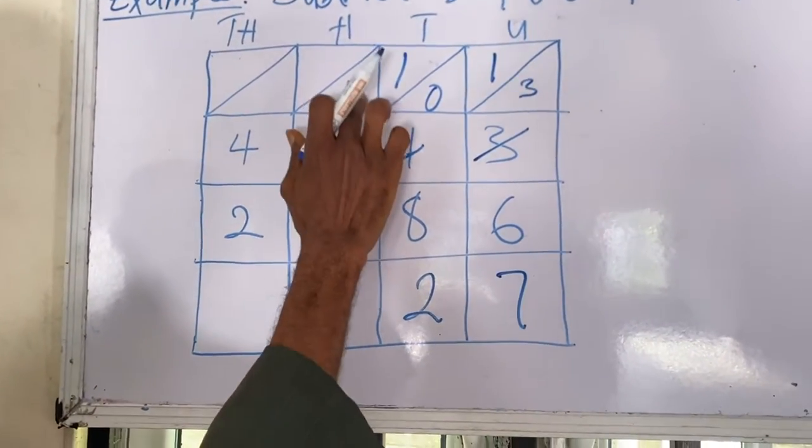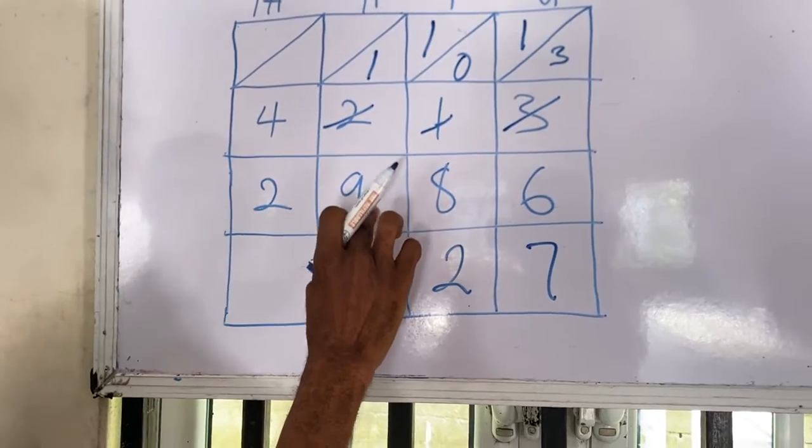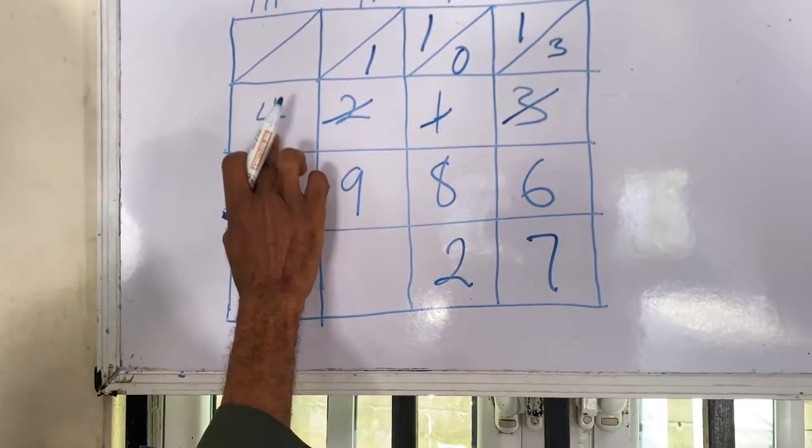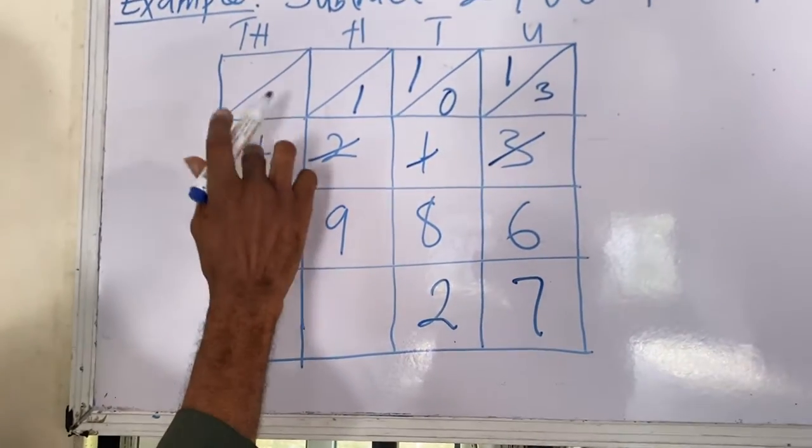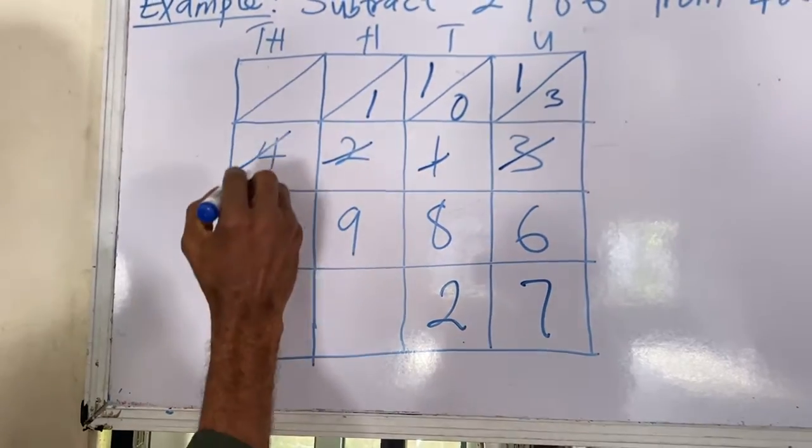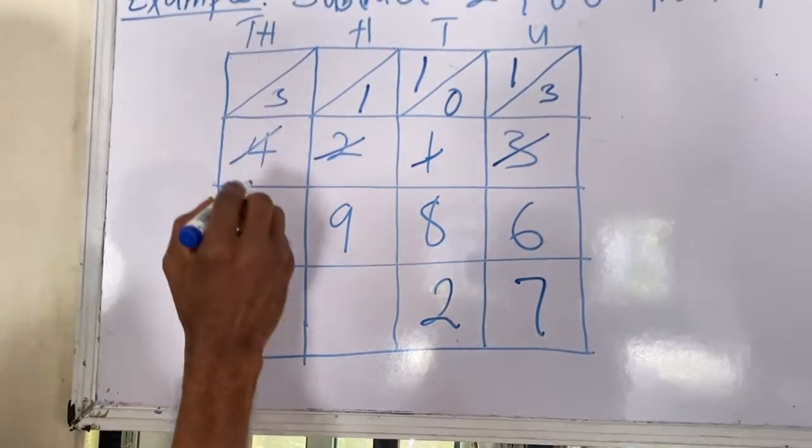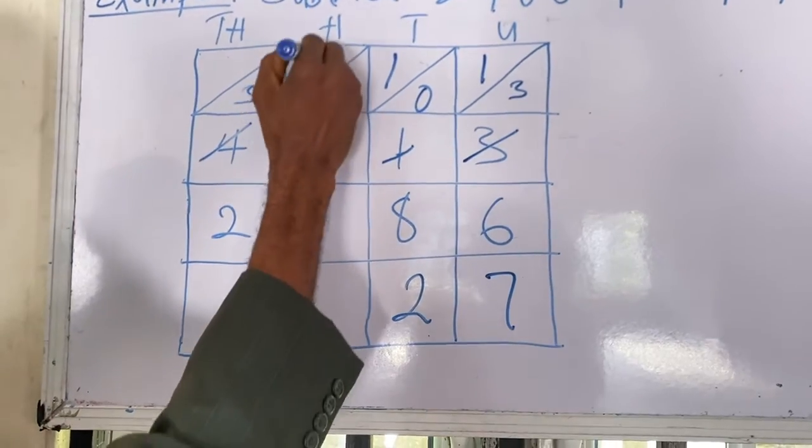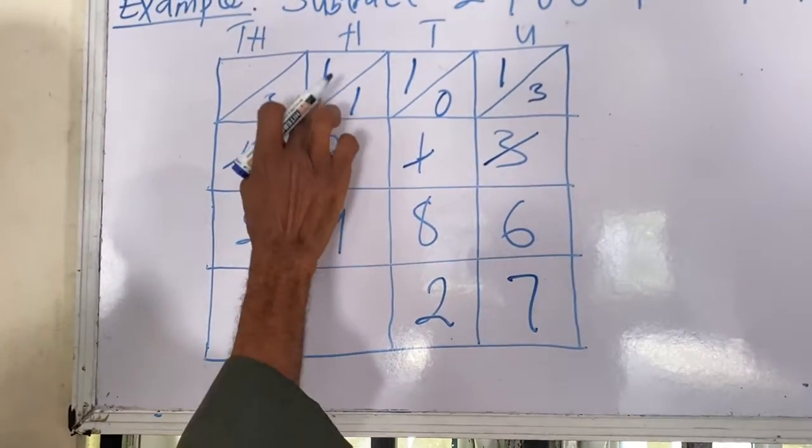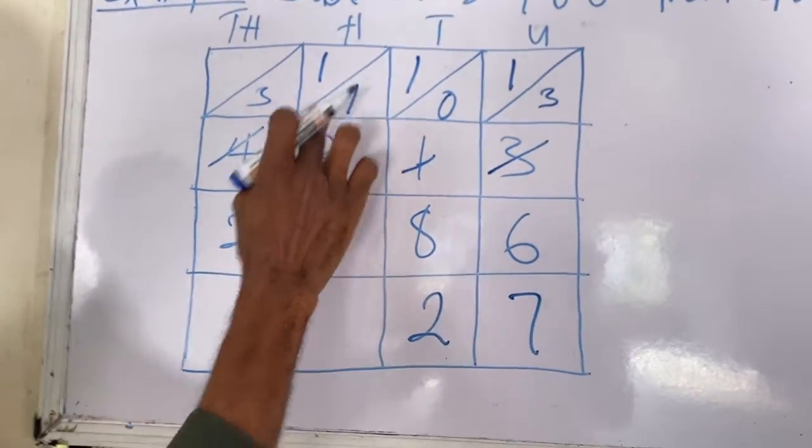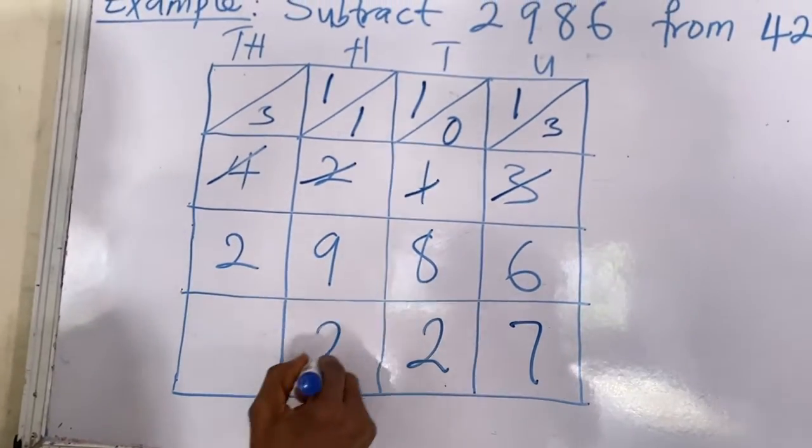What is left here is 1. 1 minus 9 is impossible. Then you move to this side. Come and take 1 here. When you take 1, you are left with 3. Place the 3 here. Then the one that you just took, place it here. So it becomes 11 minus 9 gives you 2.